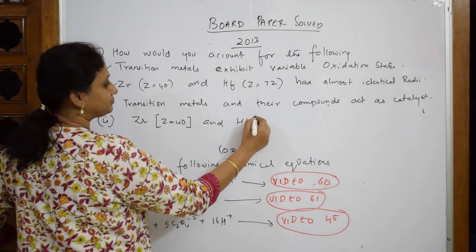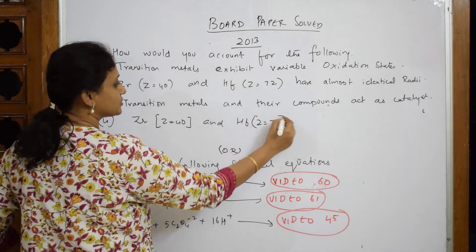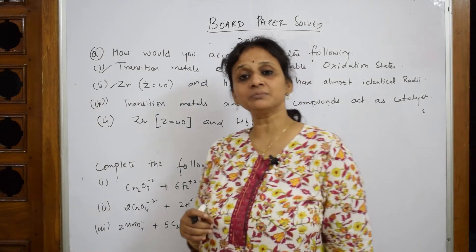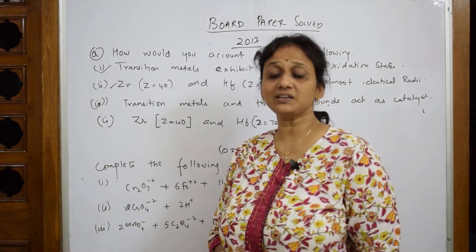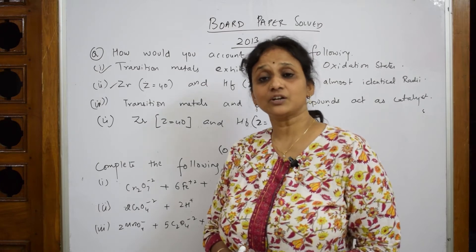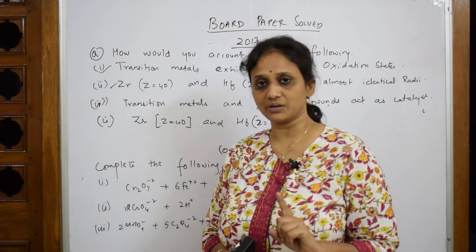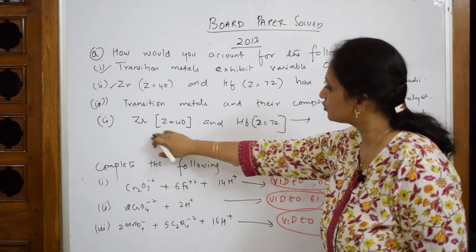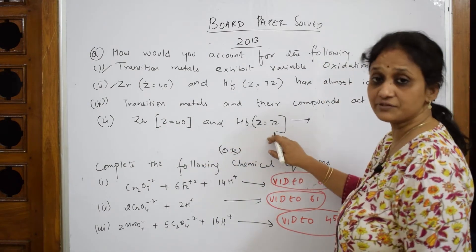Z is equal to 72. So what is happening in them? Because they are adjacent to your lanthanum, they are going to experience that lanthanide contraction factor. So this is for one mark. I have to just write only that particular term. So just I will start my answer. Zirconium of 40 and hafnium 72.